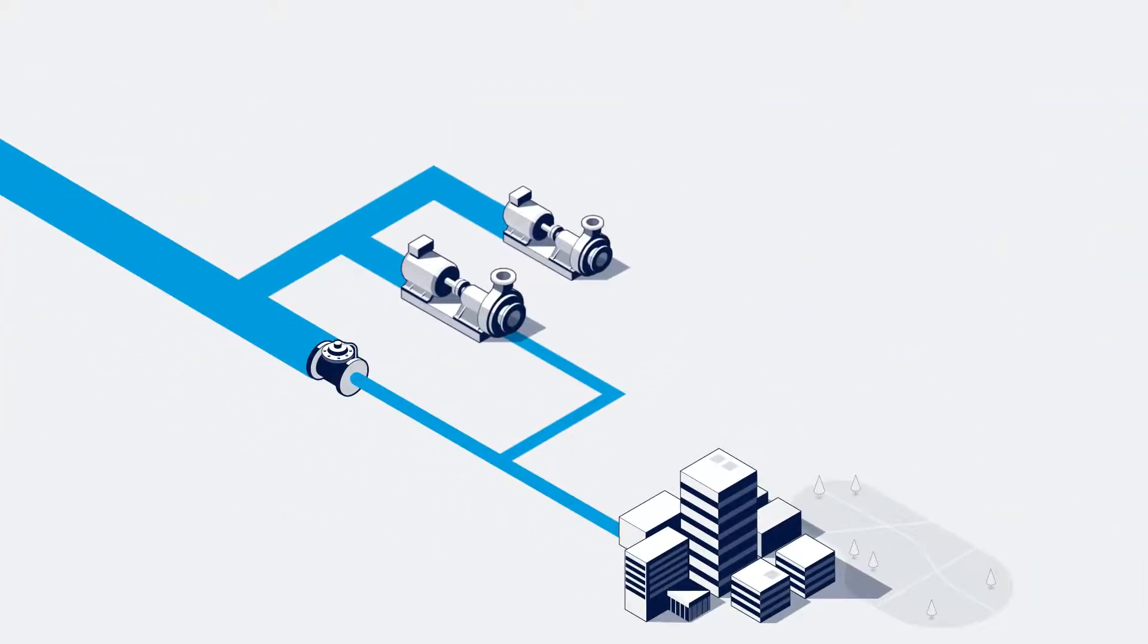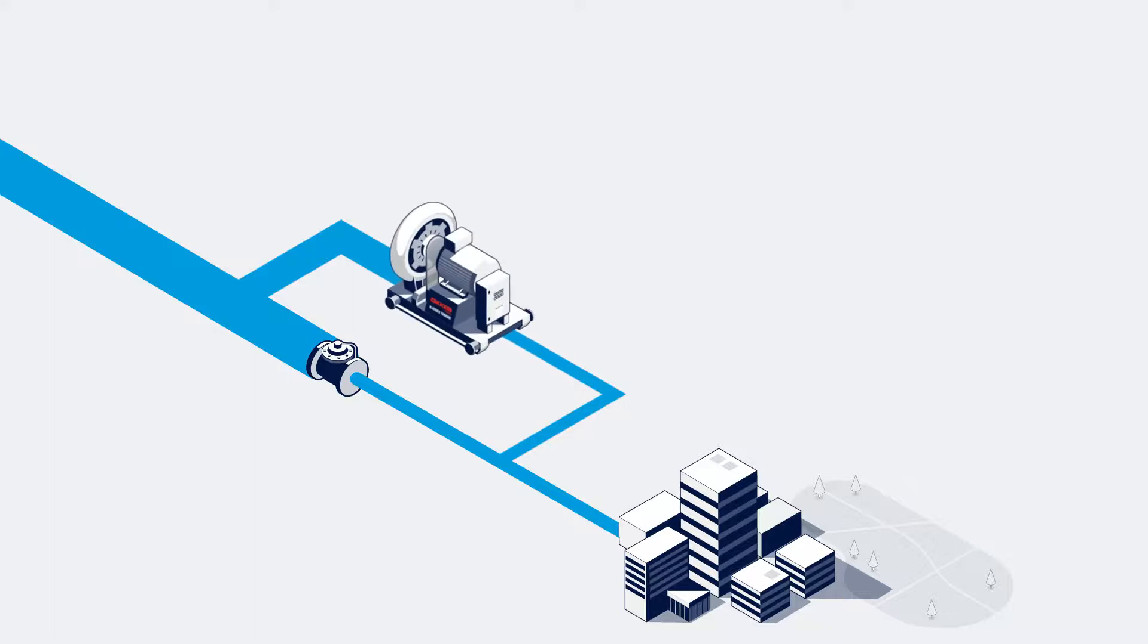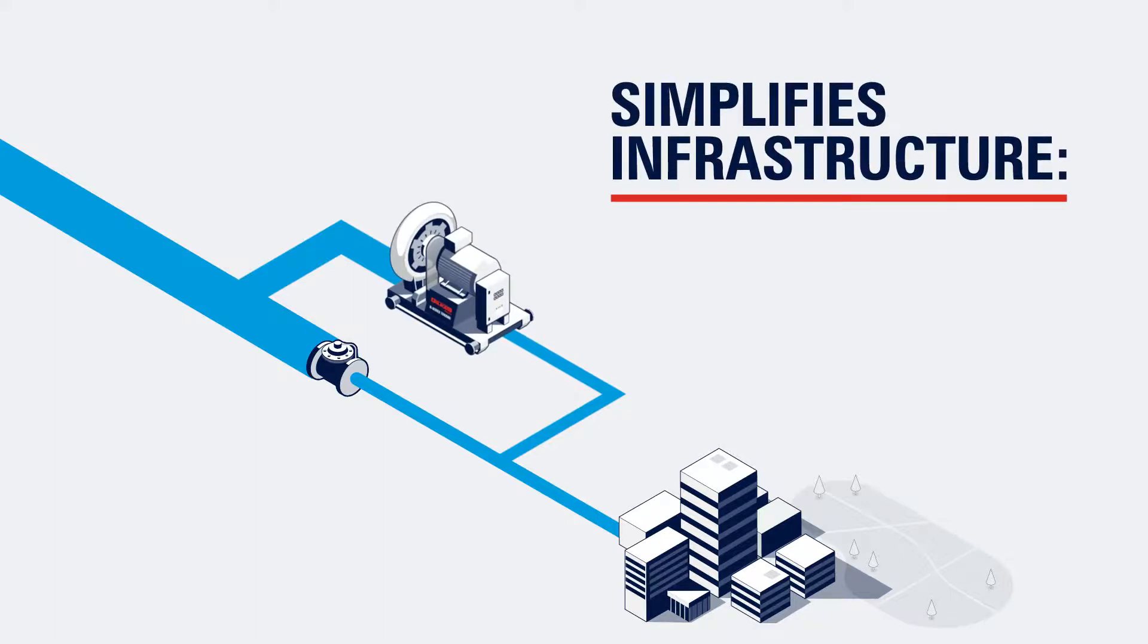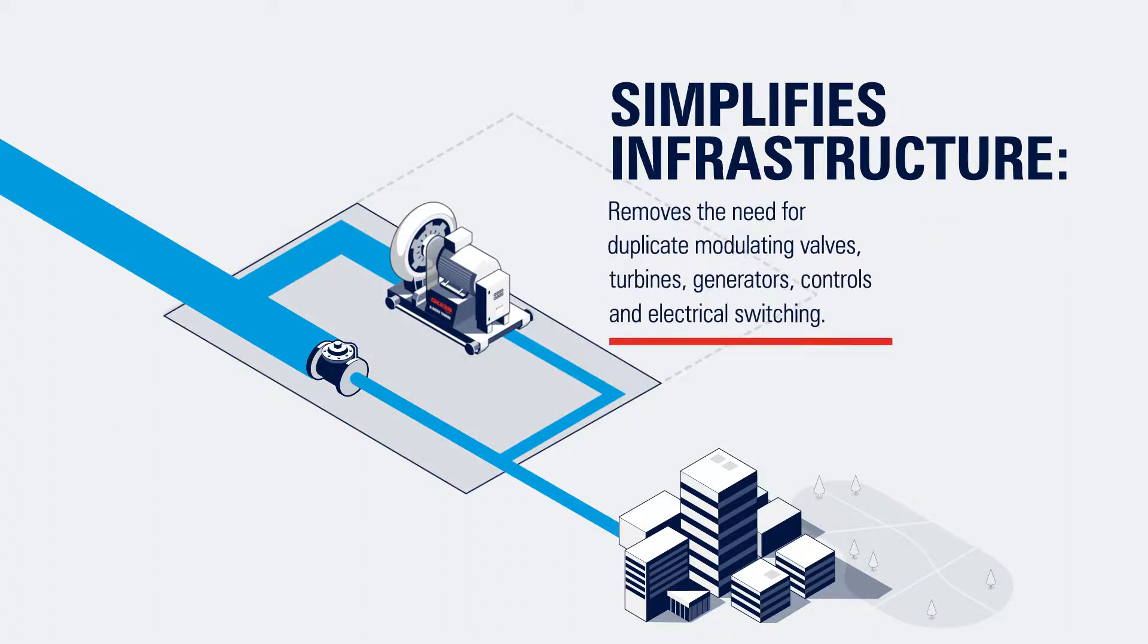Replacing multiple PATs with one Gilkes N-Series saves capex costs and simplifies the infrastructure system, reducing space requirements on new or existing sites. It also removes the need for duplicate modulating valves, turbines, generators, controls, and electrical switching.